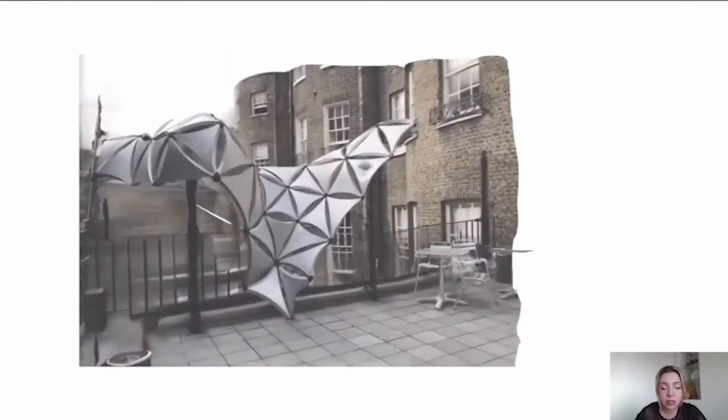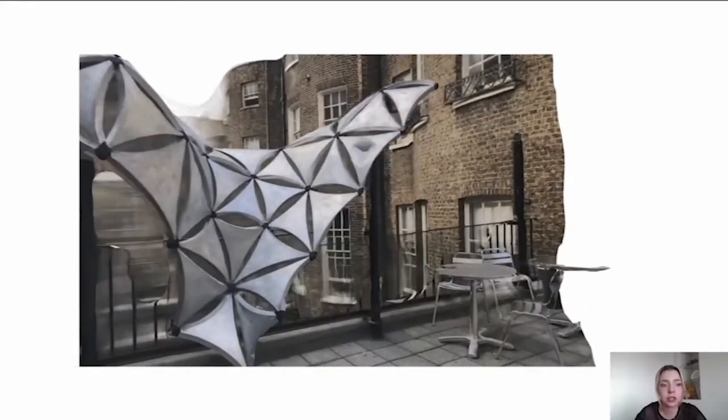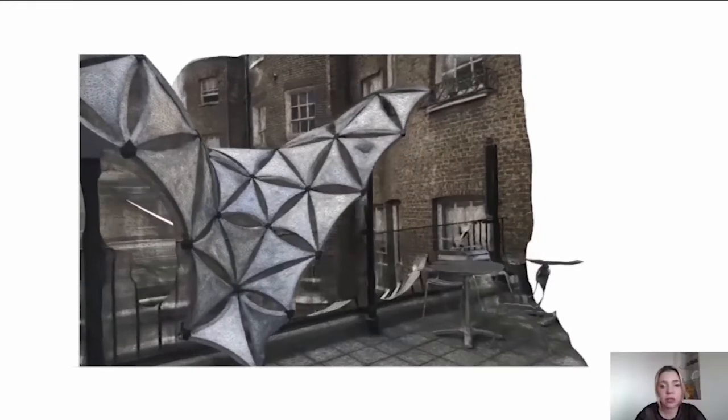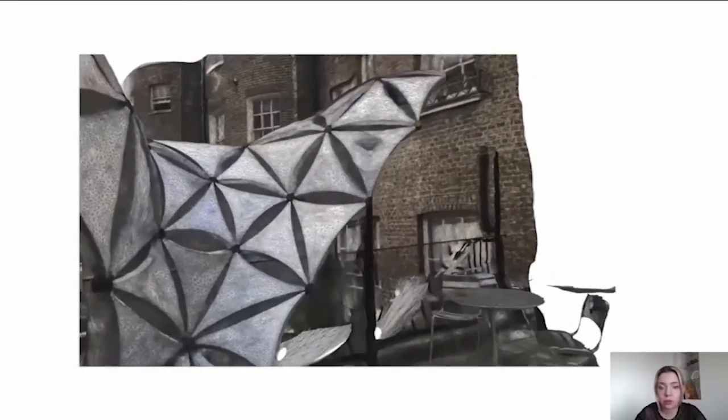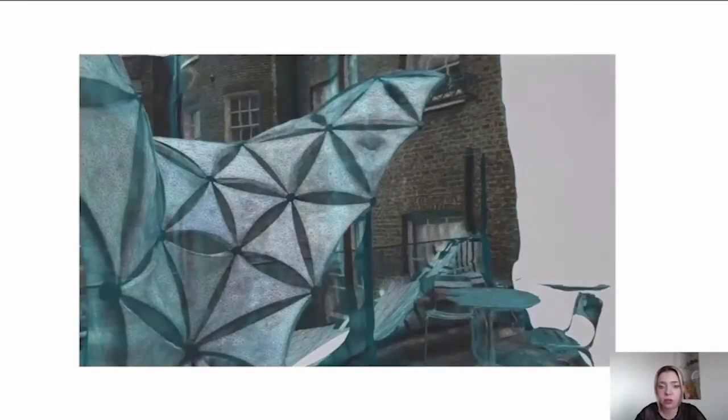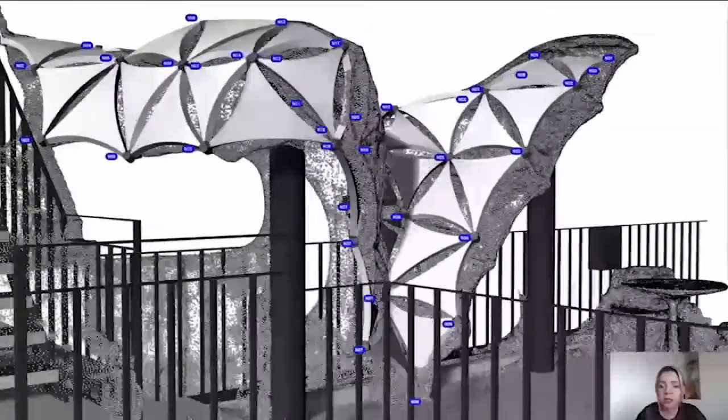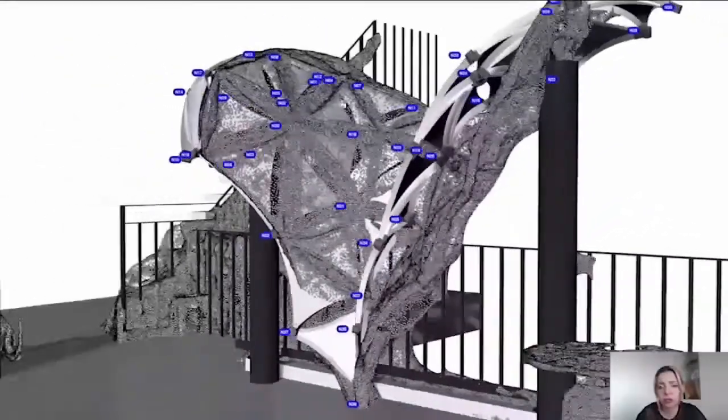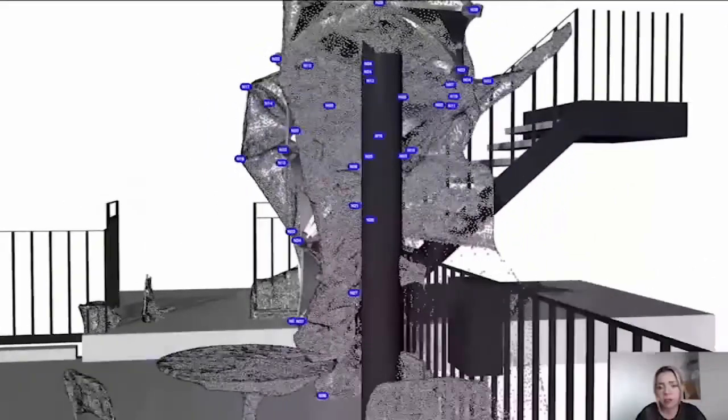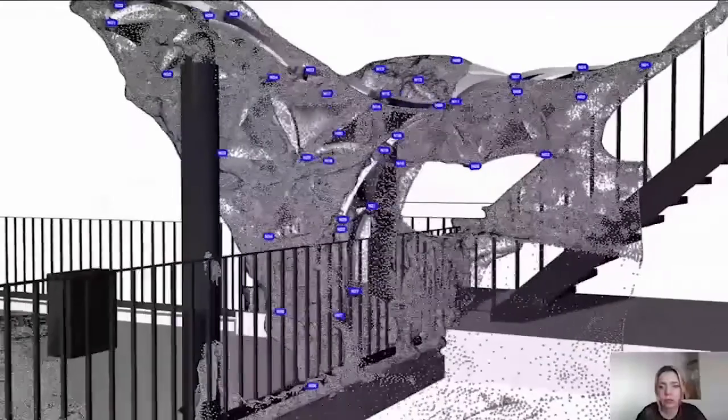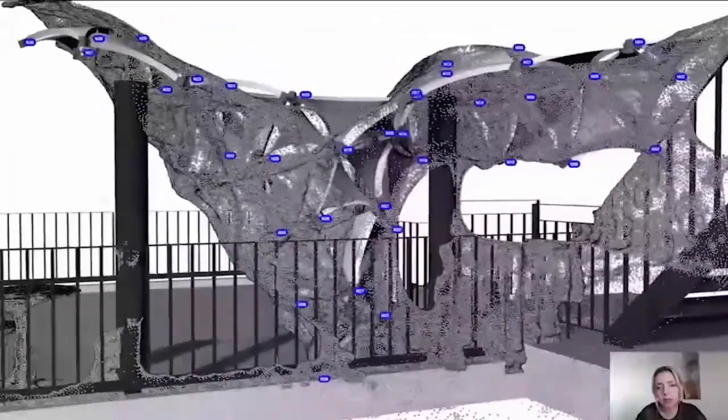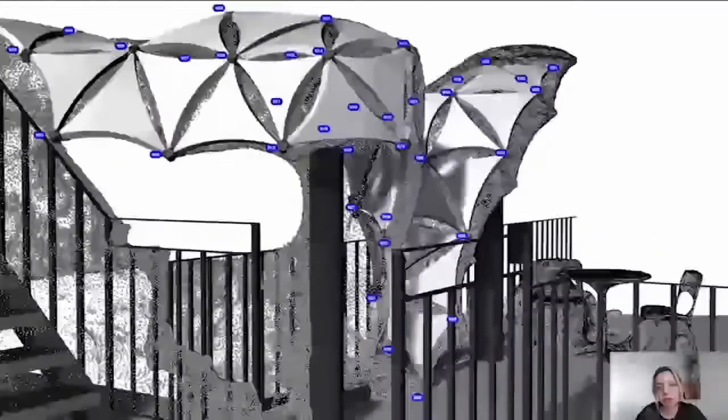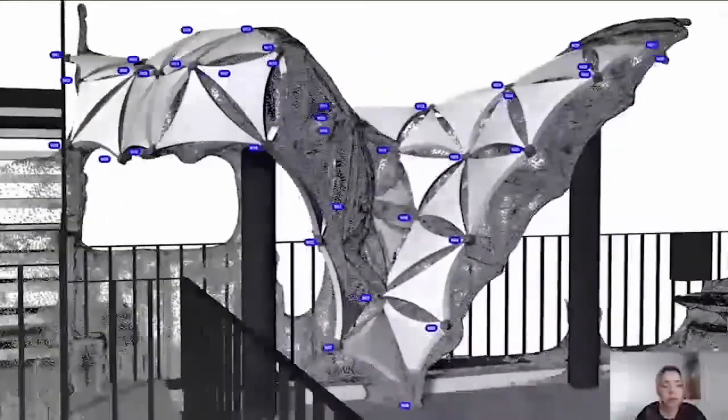And what we did afterwards to evaluate the process was the final 3D model was 3D scanned and the digital representation of the installation was made and overlaid with the computational models. And you can see some of the areas where we observed deflection and this gave us a really good idea about how the physical prototype performed and what needed to be improved further.